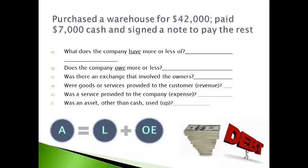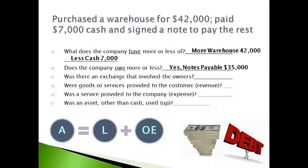The company purchased a warehouse by paying some cash and agreeing to pay the rest in the future. The company received a warehouse and gave up cash. The company owes, which will be reported as notes payable. There was no exchange with owners or customers, and a service was not received, and no assets were used up. The balance sheet reports more cost in the warehouses, less cash, and more notes payable.